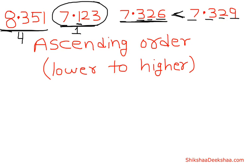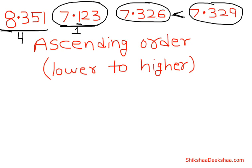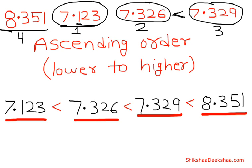So to arrange them in ascending order, we write the first number in second place and the other in third place. The ascending order is complete.